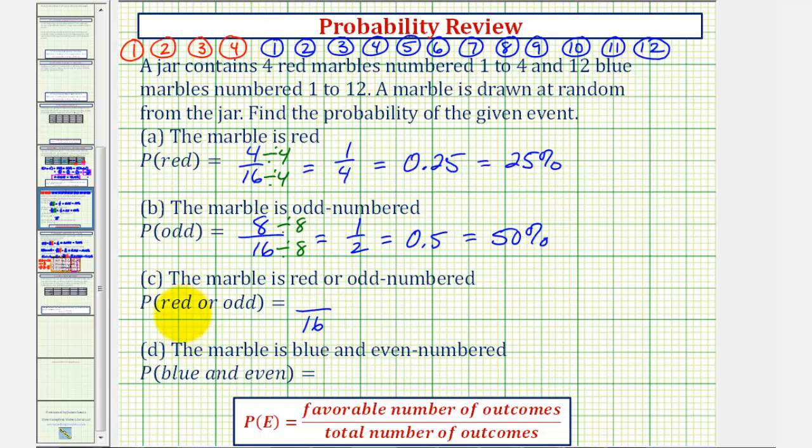Let's count the marbles that are red or odd. Notice there are four red marbles here, so these are favorable. We're only going to count them once, so we're not going to count these again when we count the odd marbles.